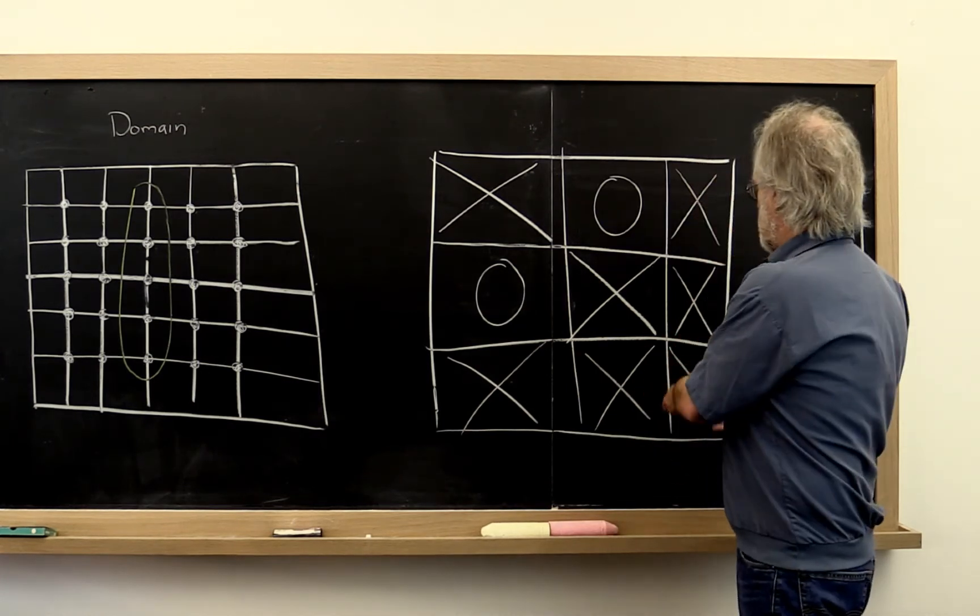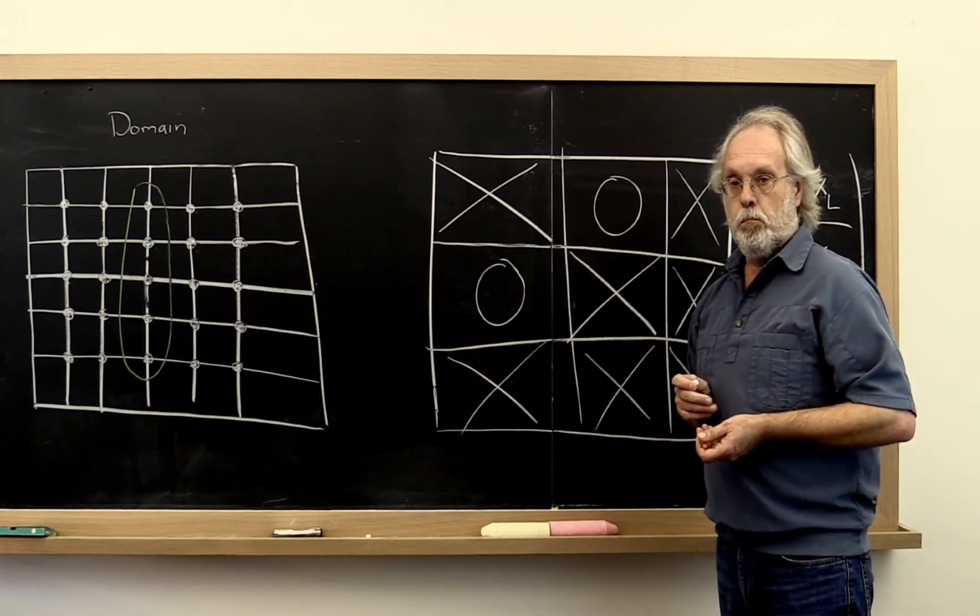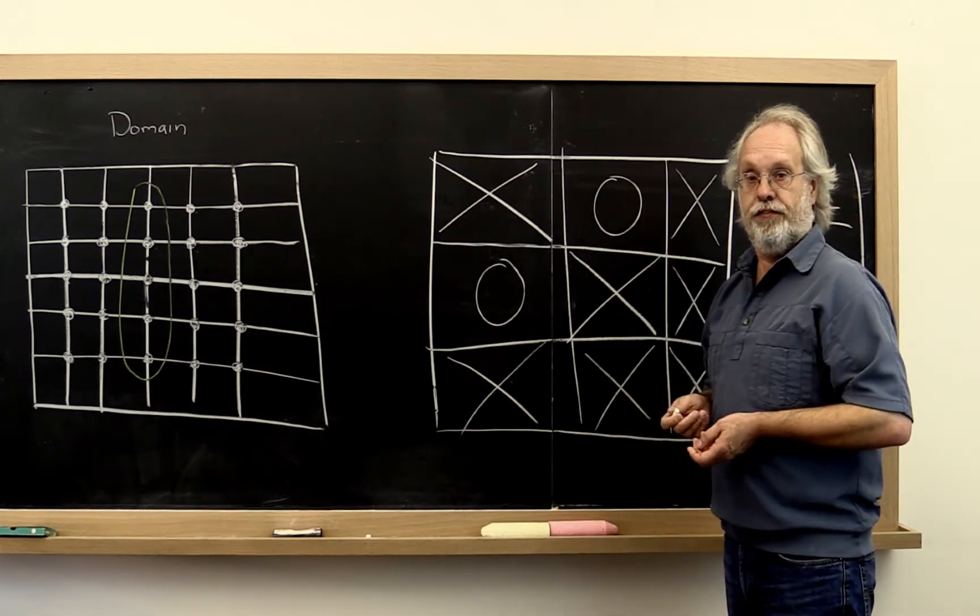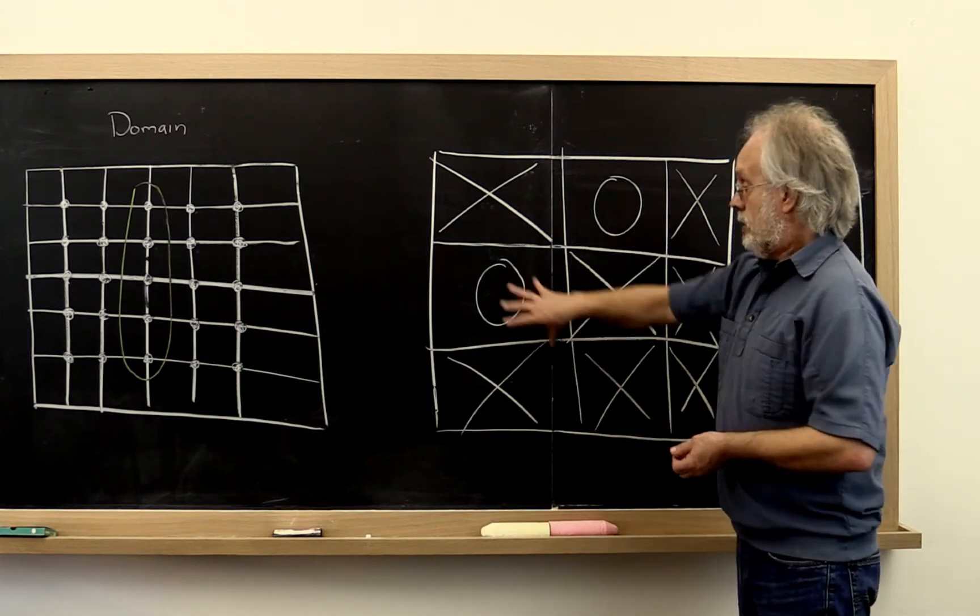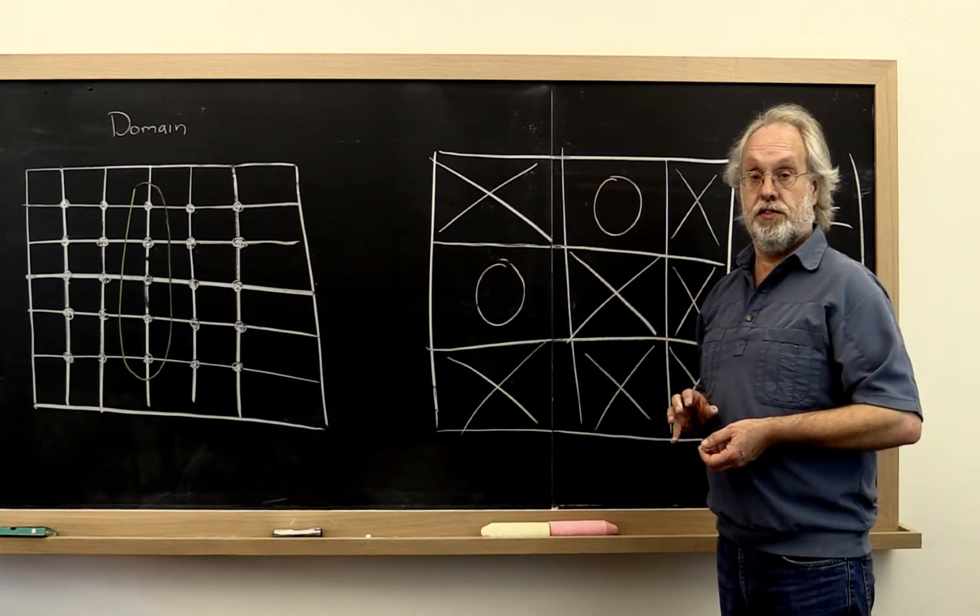Now there's further sparsity here, here, here, here, here. But, you know, at 30,000 feet looking at this, the important thing is that we've identified nice big blocks of zero.